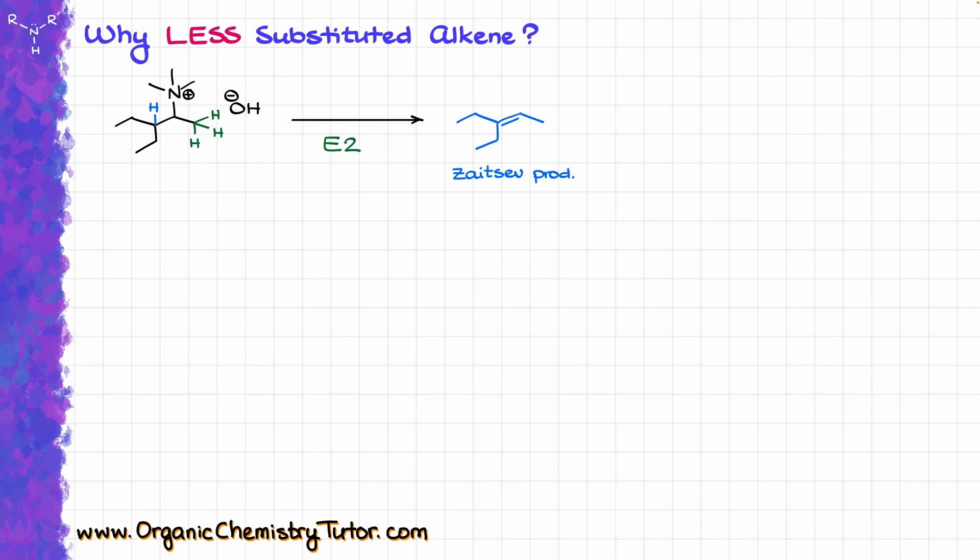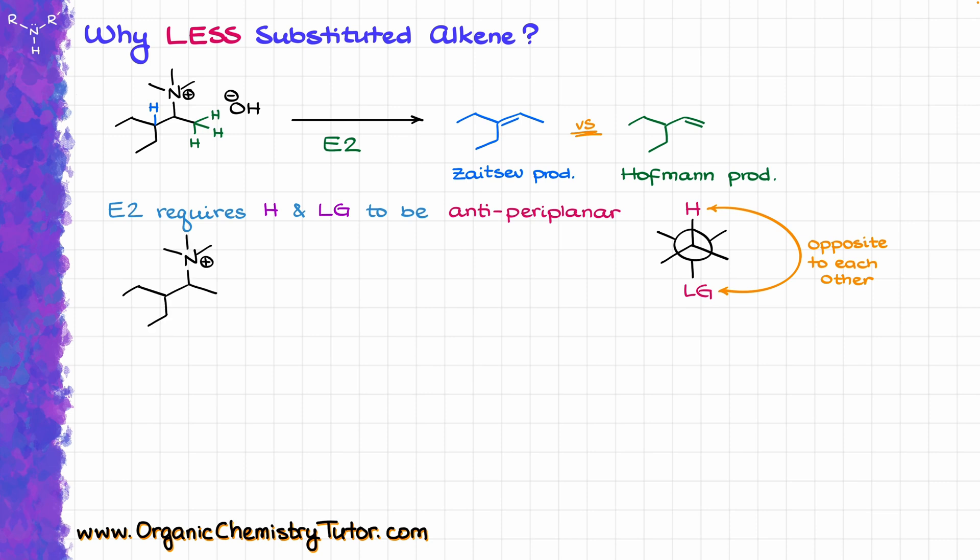To understand why we're getting the Hoffman product, we need to remember one extremely important thing about E2 reactions. In an E2 reaction, the hydrogen and leaving group must be anti-periplanar to each other. If I draw a generic Newman projection, anti-periplanar means these two groups are opposite from each other. Let's see how that looks in our molecule. I'm going to redraw my molecule and look at the Newman projection from this perspective.